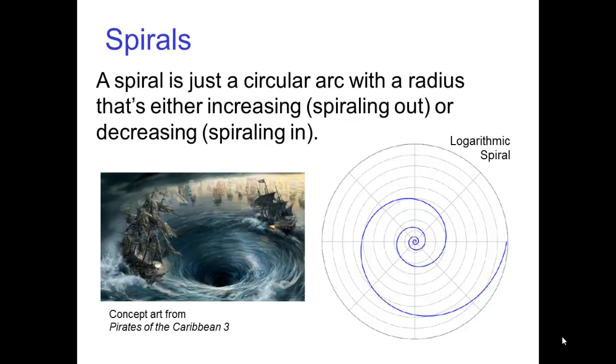There are many types of spirals depending on how the radius changes as you go around the circle. The logarithmic spiral, shown here, is a common type of spiral, but there are others.